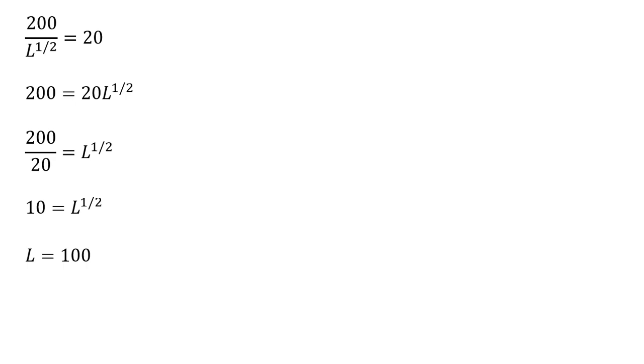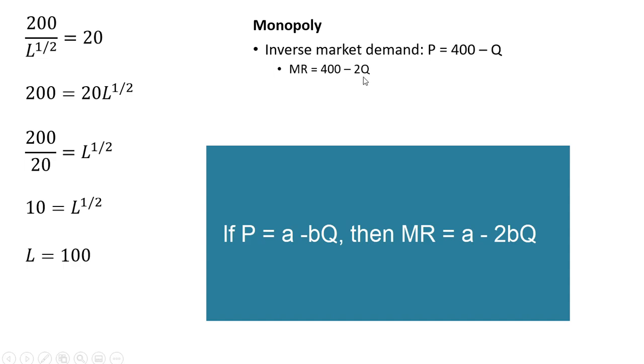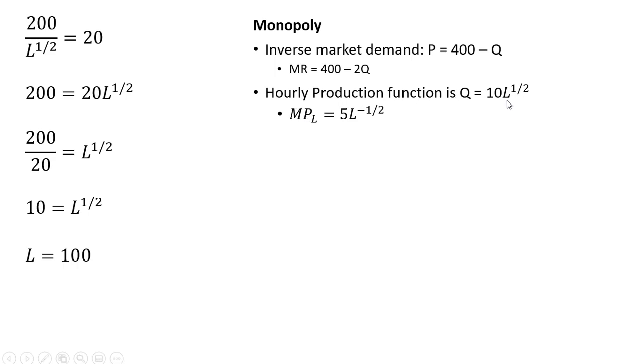Now let's move on to the monopoly. The monopolist faces an inverse market demand of price equals 400 minus Q. Marginal revenue then will be the inverse market demand with a slope that is twice as steep. So 400 minus 2Q. The hourly production function is given as follows. And we already found the marginal product of labor associated with this production function. It's right here.